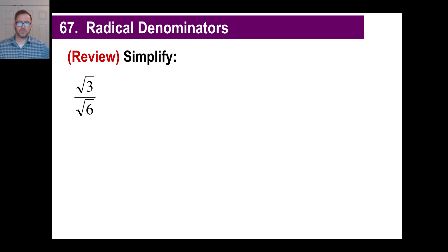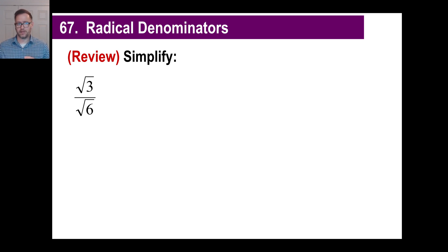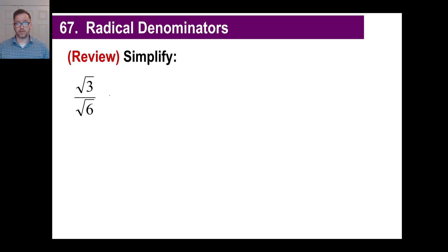Hey guys, let's take a look at what's called radical denominators. First, let's go back and do something old. You remember that if you have an irrational number, like a square root that doesn't work out to an integer as an answer in a denominator, in algebra that's not acceptable — we rationalize those. In other words, we turn these into rational numbers, which means numbers that can be expressed as a fraction.